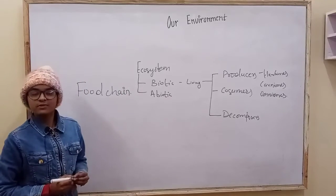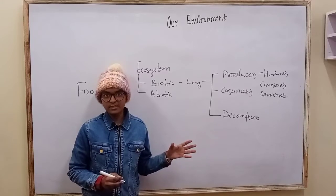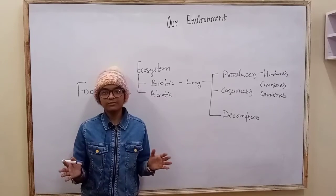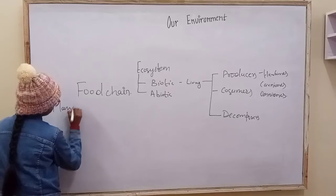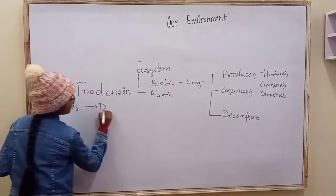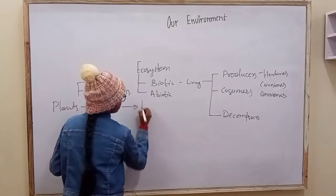Food chain is a transfer of energy from one trophic level of organisms to another trophic level of organisms. Like plants to deer to lion.